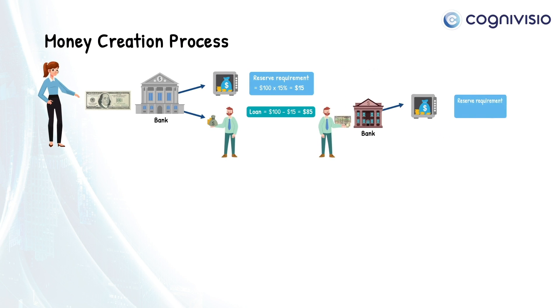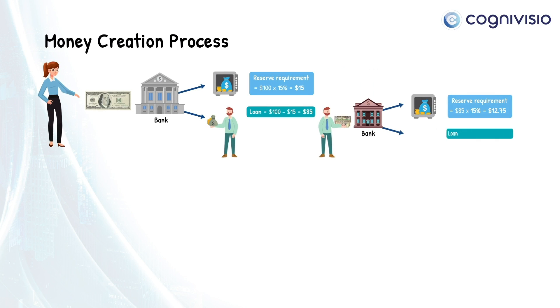Again, the bank sets aside 15% of this deposit as reserve requirement, which is $12.75, and is able to loan out the remaining amount, which is equal to $72.25.